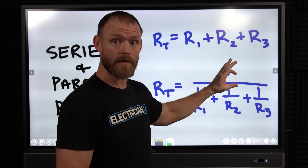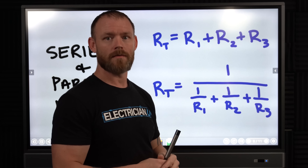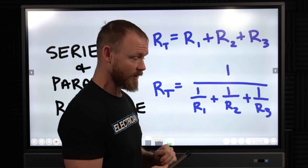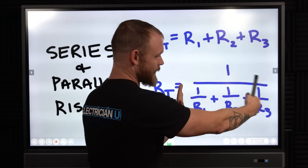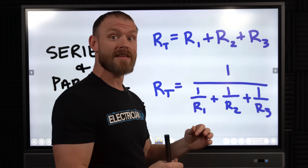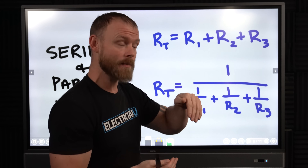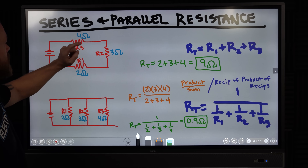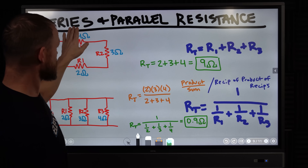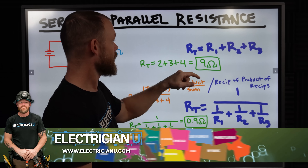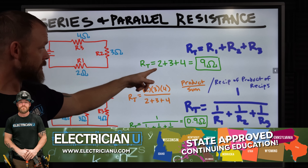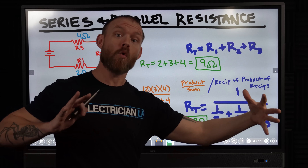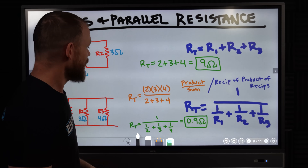Where it gets tricky is parallel resistance. You take the reciprocal of the sum of reciprocals. So for a series circuit with R1=2 ohms, R2=3 ohms, R3=4 ohms, total resistance equals 2+3+4 = 9 ohms. That's a lot of resistance because each one in series adds more resistance to the circuit when voltage is applied.